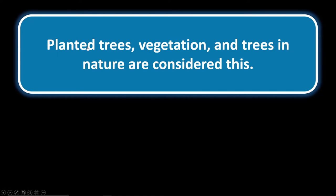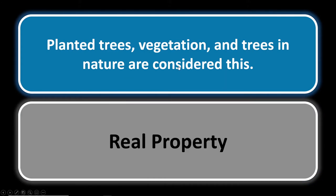Real property number one: planted trees, vegetation, and trees in nature are considered what? The category name gives it away — these are considered real property. They are attached to the land, so planted trees, vegetation, and trees in nature are fixed to the land and that is considered real property.